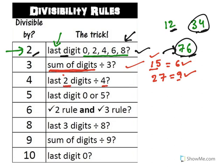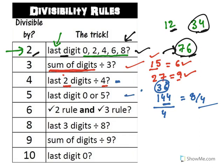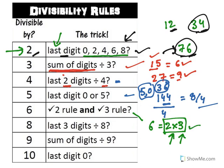For divisibility by 4, the last 2 digits must be divisible by 4. For example, take 144: the last two digits are 44, and 4+4=8, which is divisible by 4, so 144 is divisible by 4. For divisibility by 5, the last digit should end with 5 or 0. For 6: since 6 is a multiple of 2 and 3, if the number satisfies both divisibility rules for 2 and 3, it will be divisible by 6.